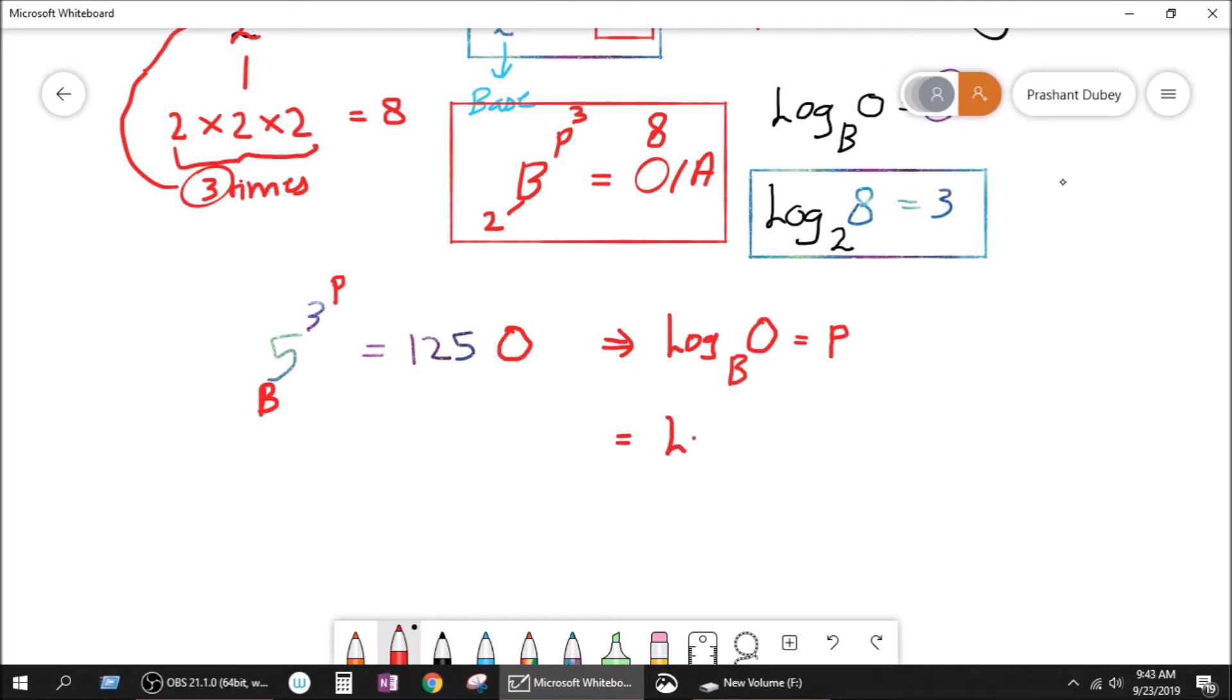This is equal to log. What is our base? Our base is 5. What is our output? 125. And what is our power? Our power is 3. It means the base will be multiplied 3 times. It means 5 times 5 times 5 in order to give the output of 125. Now, this is called log.